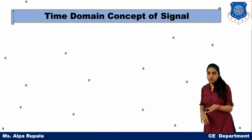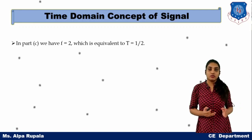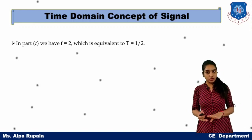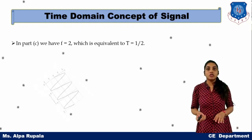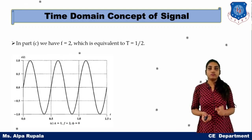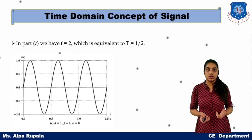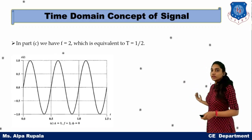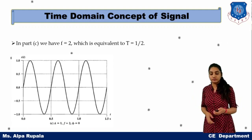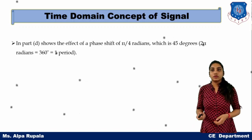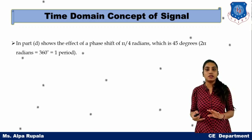If the frequency is 0.5 Hz, the time period doubles. If the frequency is 2 Hz, the signal repeats twice within the 0 to 1 second interval.